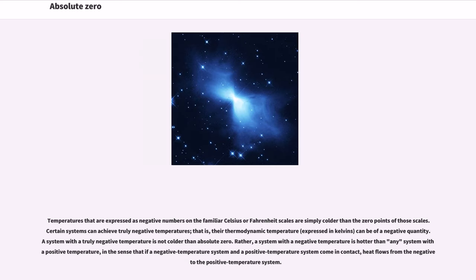Temperatures that are expressed as negative numbers on the familiar Celsius or Fahrenheit scales are simply colder than the zero points of those scales. Certain systems can achieve truly negative temperatures, that is, their thermodynamic temperature, expressed in Kelvins, can be of a negative quantity. A system with a truly negative temperature is not colder than absolute zero. Rather, a system with a negative temperature is hotter than any system with a positive temperature, in the sense that if a negative temperature system and a positive temperature system come in contact, heat flows from the negative to the positive temperature system.